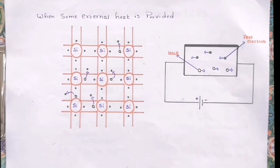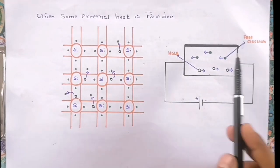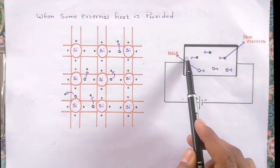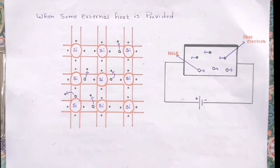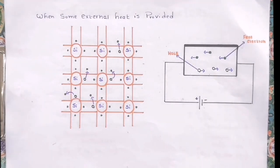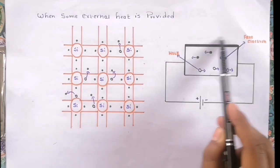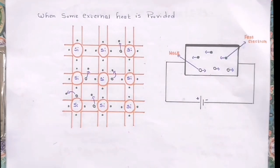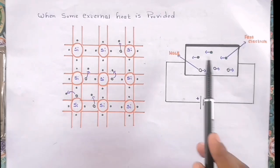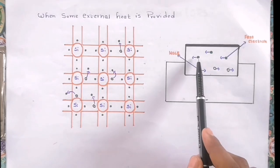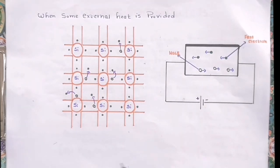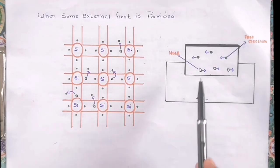The electrons are moving in one direction, so the flow of current will be opposite to the flow of electrons. The noteworthy point is that the flow of current is due to only the flow of electrons, and the holes do not come outside the semiconductor material.